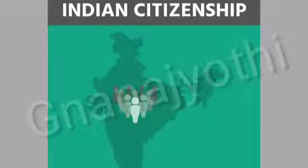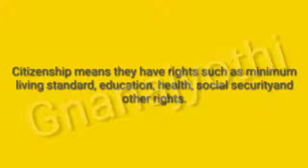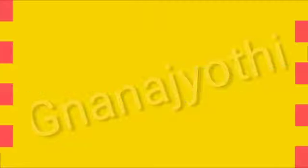What is the meaning of citizenship? The system which enables every individual to lead a better life is called a nation. A citizen is a responsible member of the nation. It means they have rights such as minimum living standard, education, health, social security, and other rights. The citizens will have close relations with the nation.